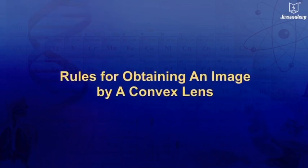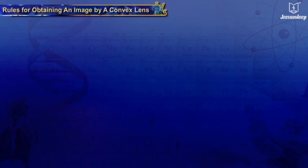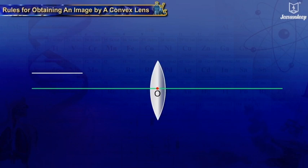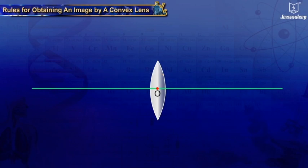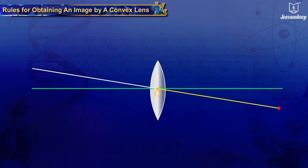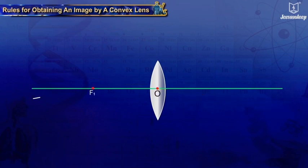Rules for obtaining an image by a convex lens: One, if the incident ray is parallel to the principal axis, then the refracted ray passes through focus F2. Two, a ray of light passing through the optical center passes through it undeviated. Three, if the incident ray passes through the focus, the refracted ray is parallel to the principal axis.